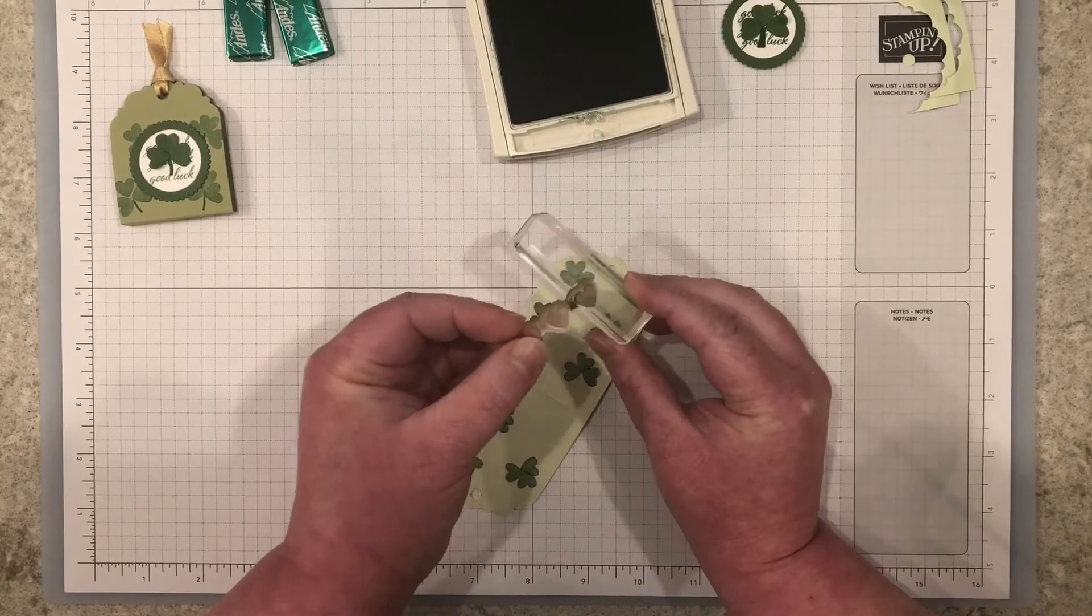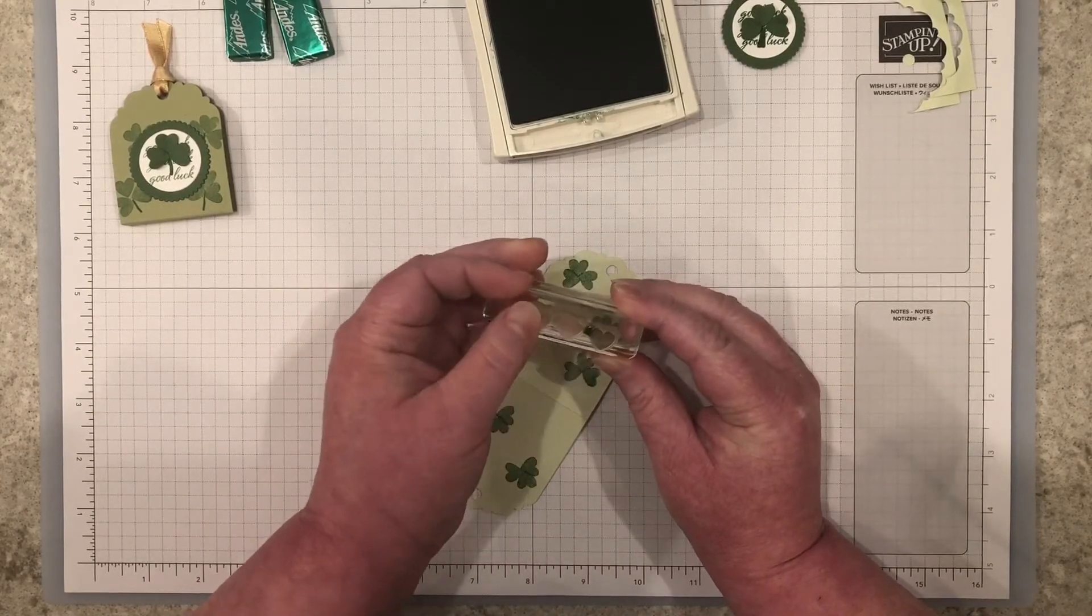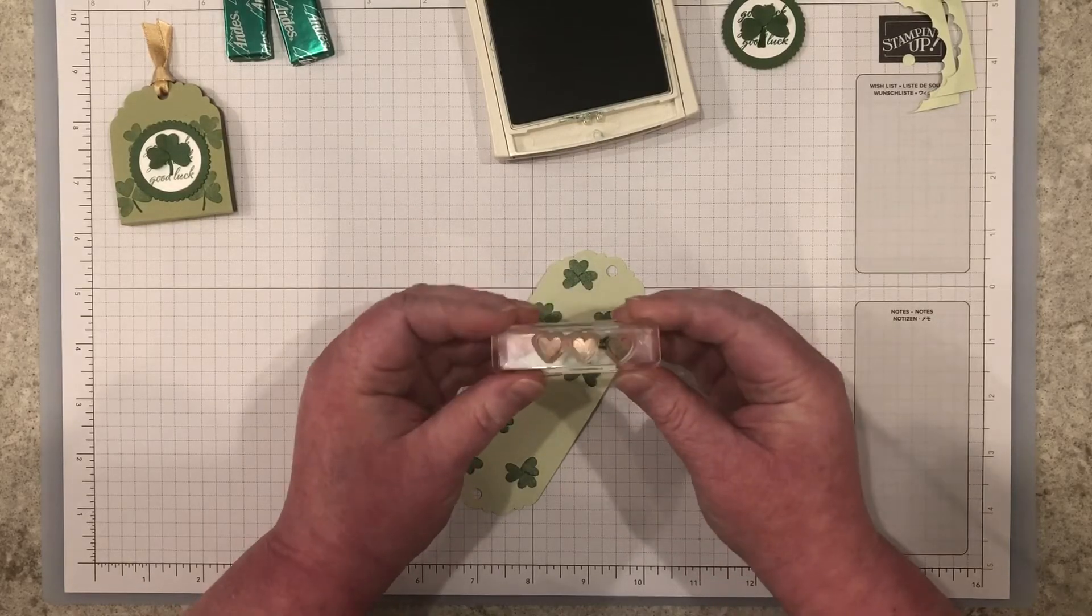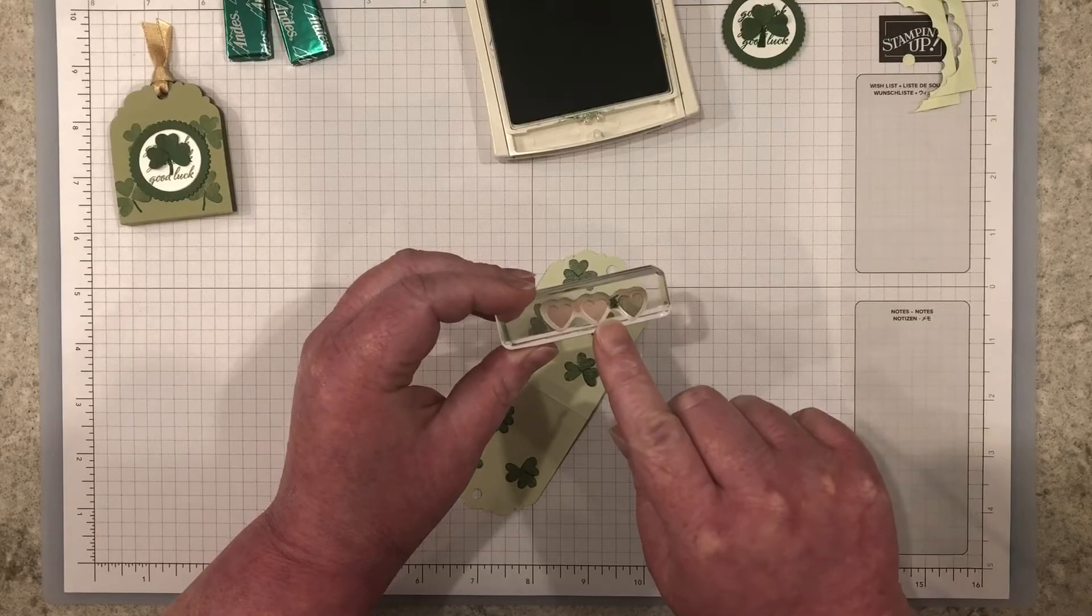Okay, now that I'm finished with the heart stamp, I'm going to put it back on the block the usual way. That way, when I clean it, I can clean the entire stamp and make sure to get any ink in the middle.